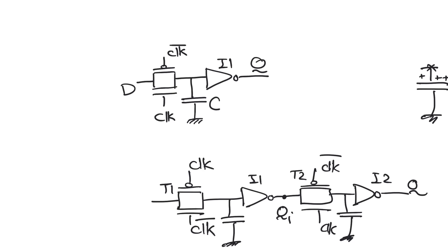So let's first consider a dynamic latch. It consists of a single transmission gate T1 and a single static inverter I1. The storage location here is the capacitance C.